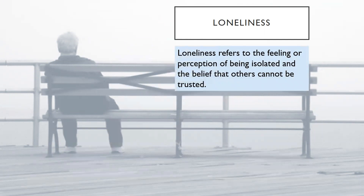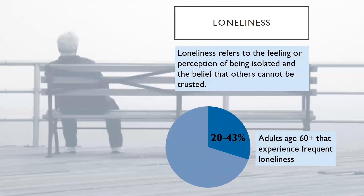A distinct but related concept of social isolation and social engagement is loneliness. Loneliness refers to the feeling or perception of being isolated and the belief that others cannot be trusted. Loneliness matters greatly in terms of healthy aging because it can lead to less physical activity, increased blood pressure, participation in harmful health behaviors such as smoking, excessive alcohol consumption, or overeating, decreased cognitive performance, increased depressive symptoms, and increased persistence of depression. Although positive social support and social engagement can help prevent loneliness, loneliness can still occur in individuals with active social lives and ample support. And although being socially isolated is a risk factor for loneliness, older adults who live alone or spend ample time alone are not necessarily lonely. Still, about 20 to 43% of adults ages 60 and older experience frequent or intense loneliness.